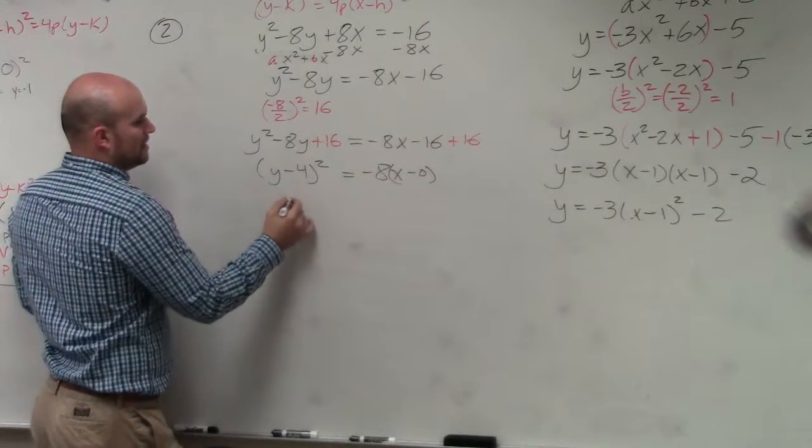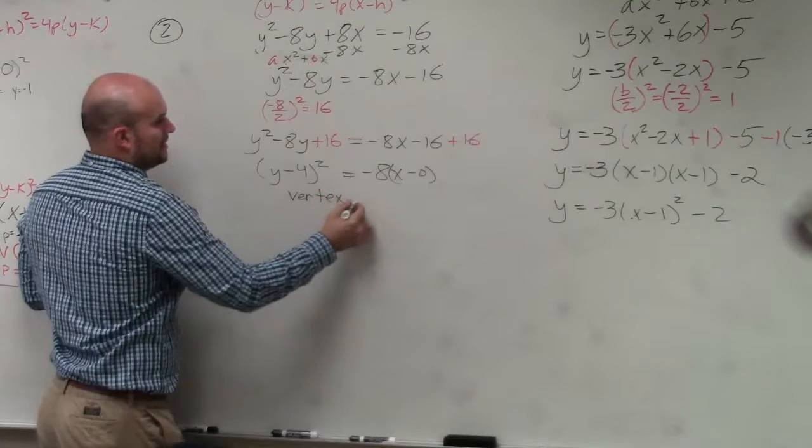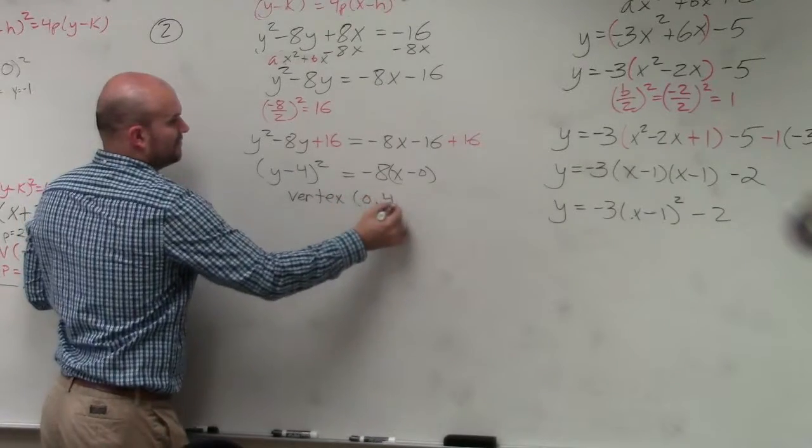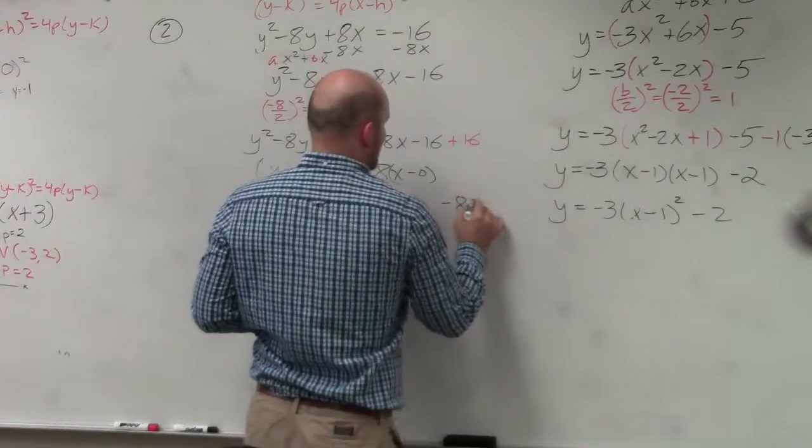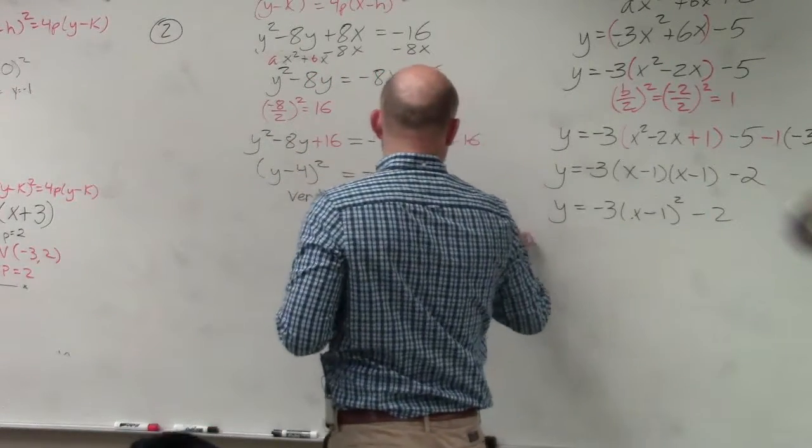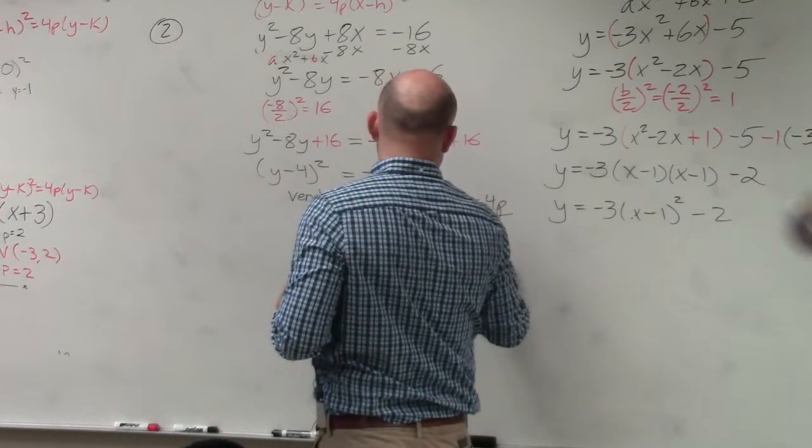So, therefore, my vertex is 0, 4. P, negative 8, is equal to 4p. Divide by 4, divide by 4. P equals negative 2.